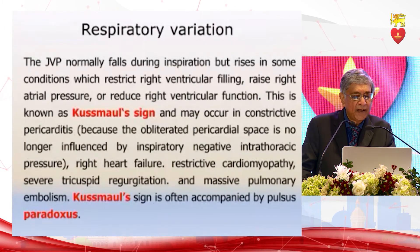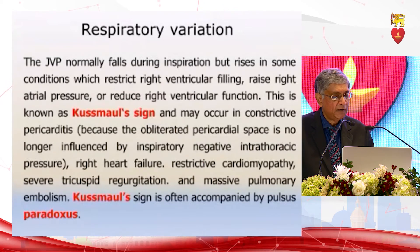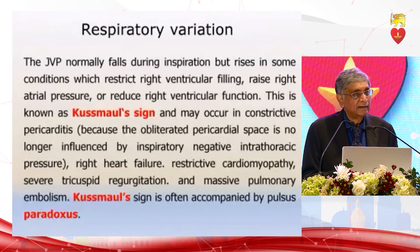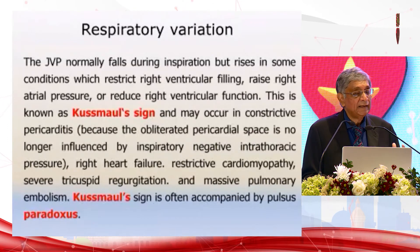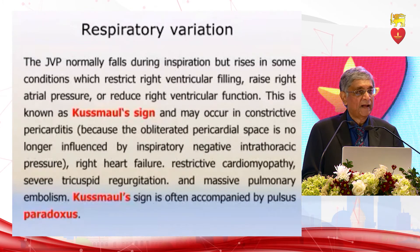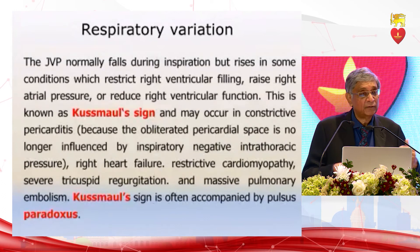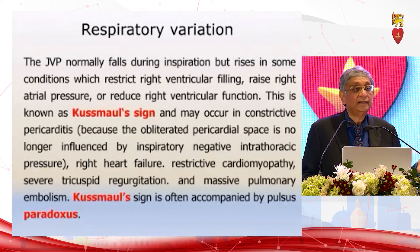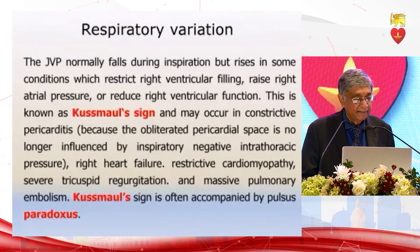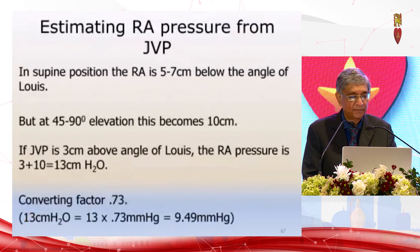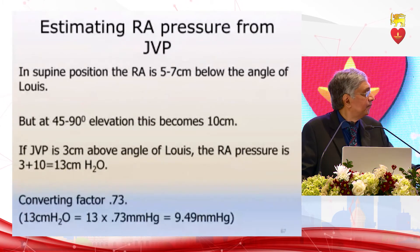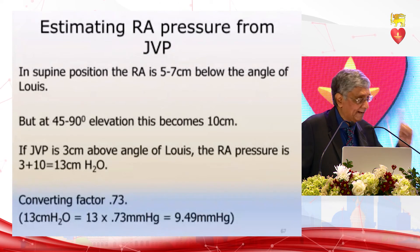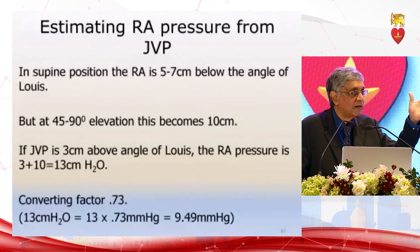Kussmaul's sign: the JVP normally falls during inspiration because intrathoracic pressure falls, but venous return increases. Usually the rise in right atrial pressure is less than the intrathoracic pressure drop, so JVP comes down — that is normal. But if intrathoracic pressures are not transmitted to the heart, right atrial pressure gets transmitted to the JVP and Kussmaul's sign occurs — the JVP goes up paradoxically on inspiration. This happens when there is right atrial and right ventricular dysfunction. If the JVP is measured at 45 degrees at three centimeters, you add 10 to get 13 centimeters of water, then multiply by 0.73 to convert to 9.49 mmHg — approximating the pulmonary capillary wedge pressure.